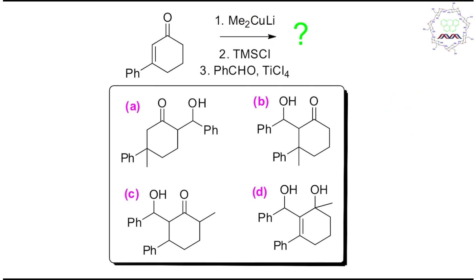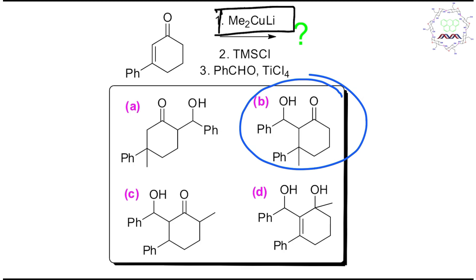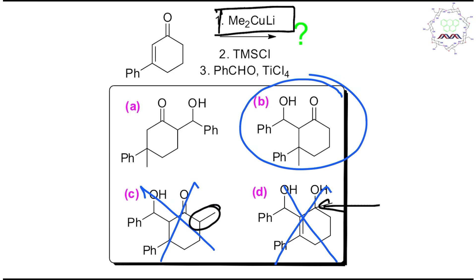The right answer is option B. Now, if this appears in an exam and you have less than 30 seconds: first, recognize this is a Gilman reagent — it attacks the softer beta carbon. That immediately eliminates options C and D, because option D would require 1,2-addition to the carbonyl carbon, and option C shows no double bond product — both impossible.